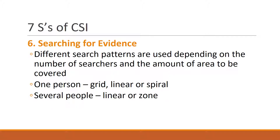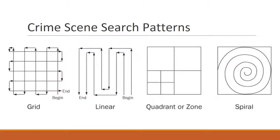The sixth S is to search for evidence. There are different search patterns depending on how many searchers you have and the area to be covered. With one person, you choose a grid, linear, or spiral pattern. With several people, you use linear or zone. In a grid search, you go in two directions covering the same points essentially twice. In a quadrant or zone search, you split it up among multiple people.